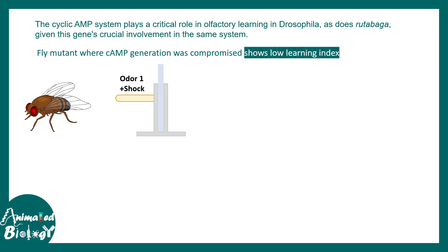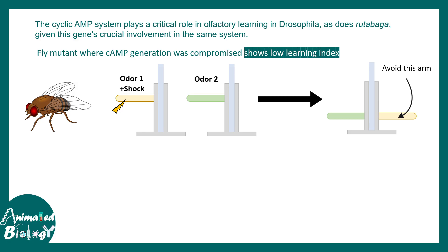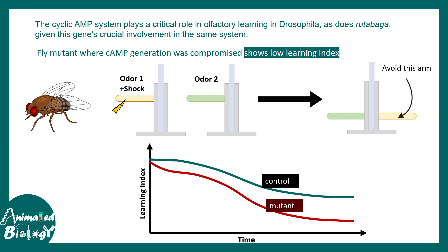In the olfactory learning assay, an odor is paired with a shock, so the fly remembers this aversive cue and tries to avoid that odor later. A second odor without a shock is also presented. When given a choice between the two arms, flies remember the odor associated with the shock and avoid that arm, allowing calculation of a learning index. Mutants lacking cyclic AMP show a lower learning curve, confirming that cyclic AMP is essential for olfactory learning in flies.